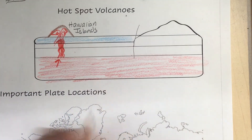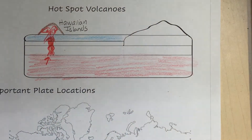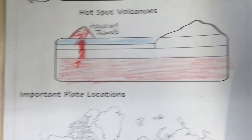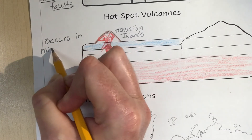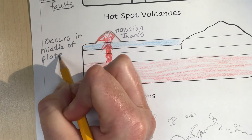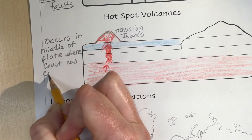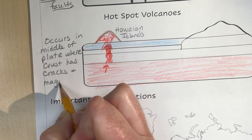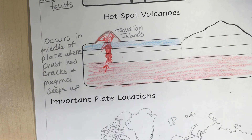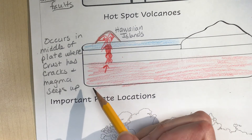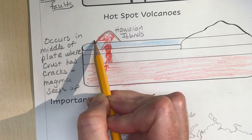The Hawaiian Islands are on the Pacific Plate, in the middle of the plate — not on a plate boundary. What happens is this occurs in the middle of a plate where the crust has cracks and magma seeps up. Now, why do we have a chain of islands? Because the plates continue to move — where Hawaii is, that plate continues to move.